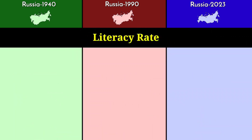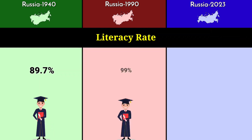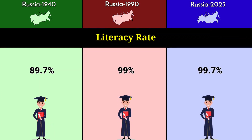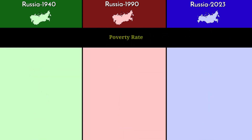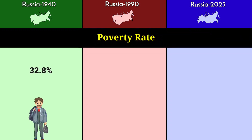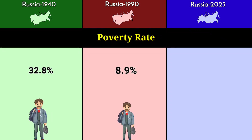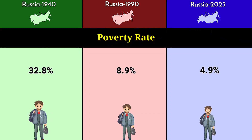Literacy rate: 89.7% in 1940, 99% in 1990, and 99.7% in 2023. Poverty rate: 32.8% in 1940, 8.9% in 1990, and 4.9% in 2023.